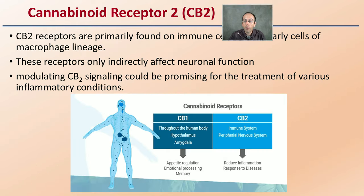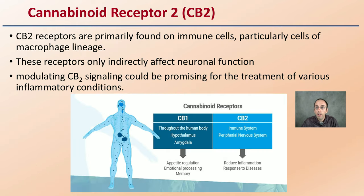In contrast, CB2 receptors are found in immune cells, particularly cells of the macrophage lineage. These receptors only indirectly affect neural function. Modulating CB2 signaling could be promising for the treatment of various inflammatory conditions — an important note, and why we need more research on this topic.